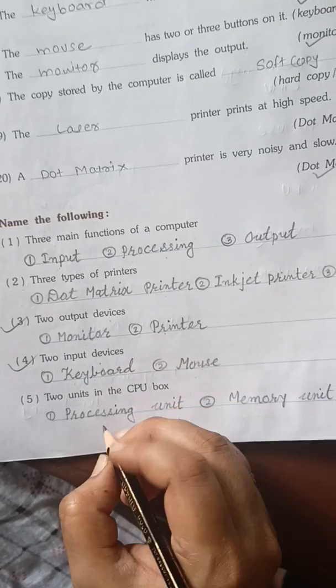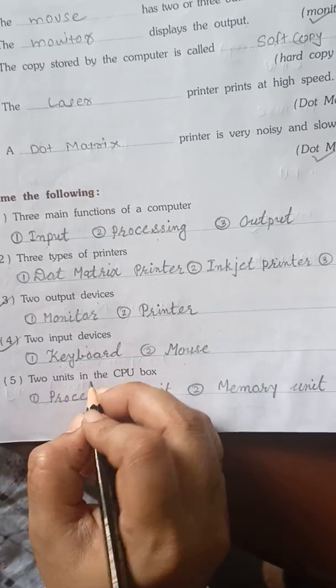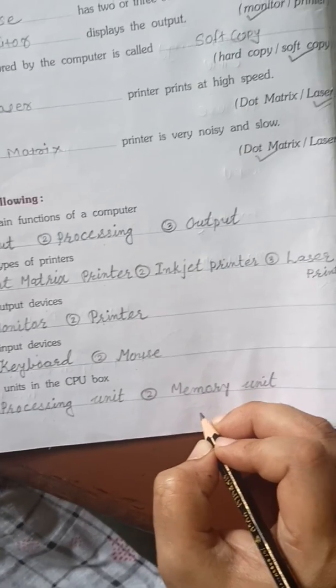Two units in the CPU box. Which are they? Processing unit and memory unit. Which are the two units of CPU? Processing unit and memory unit.